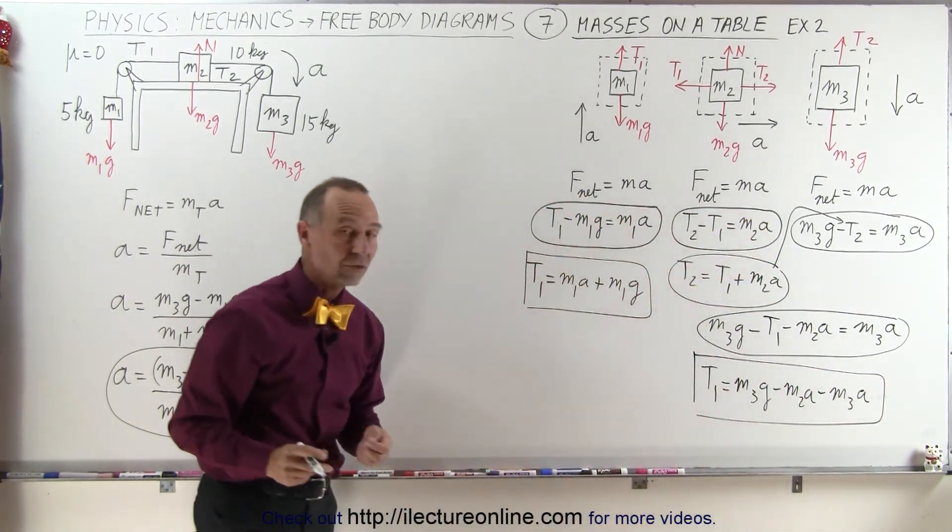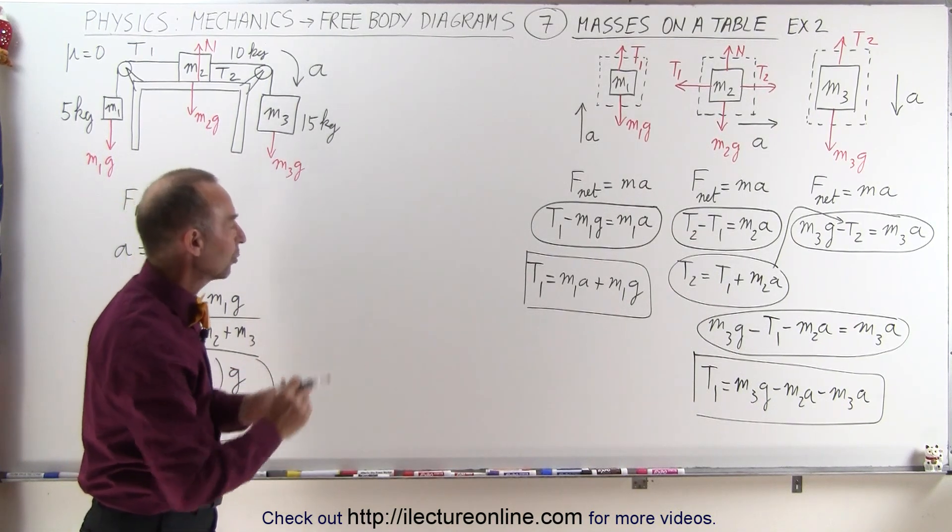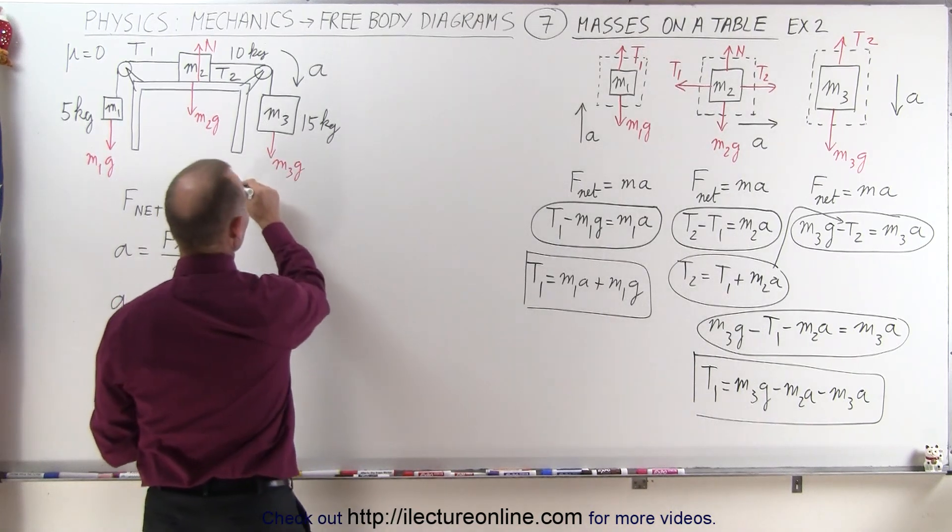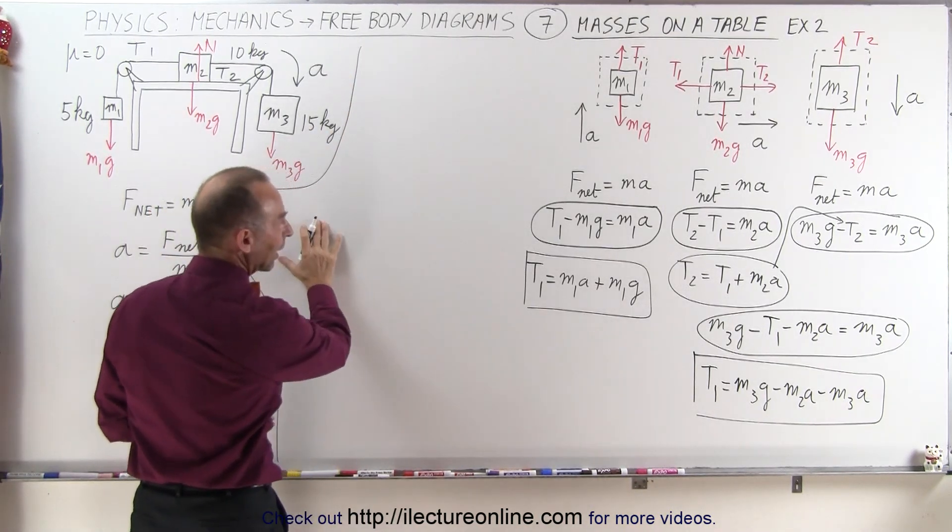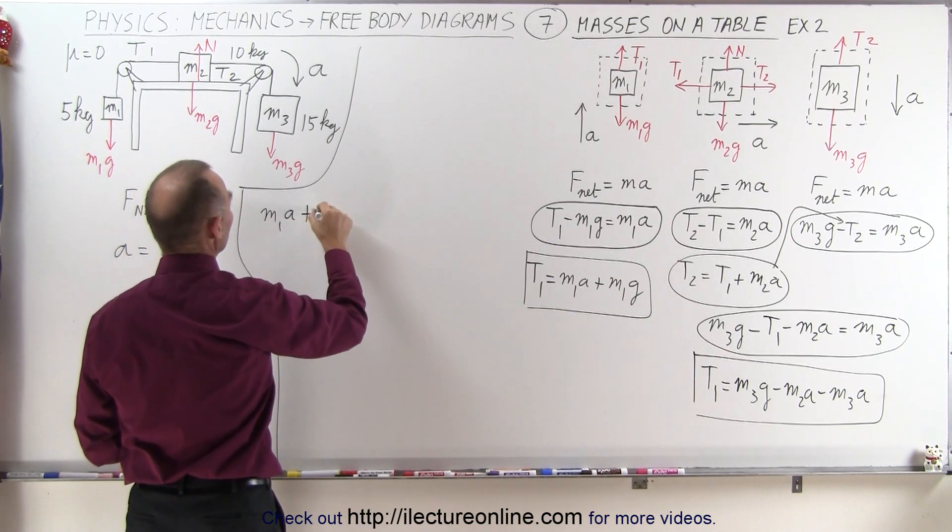So now we have those two equations, both of them solved for t1, now we can set those equal to each other. Let's see if I have enough room here, I think we have enough room right here. Let me border this off here, so we'll put it right here. So on the left side we have m1a plus m1g equals, on the right side we have m3g, we have minus m2a, and we have minus m3a.